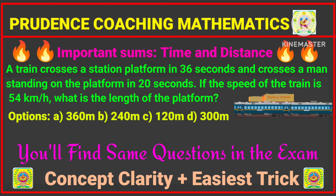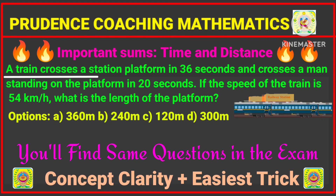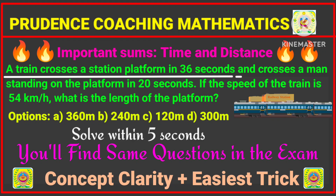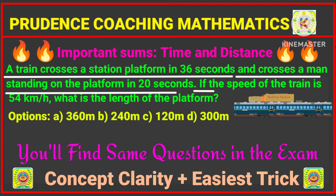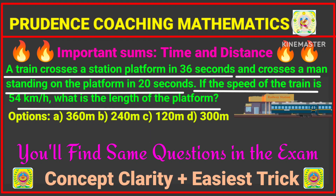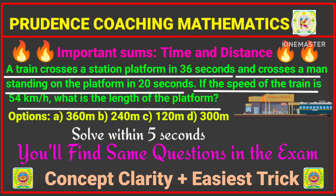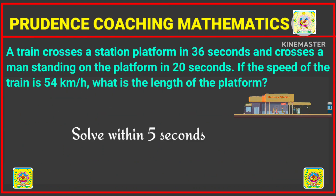Let us go through the question. A train crosses a station platform in 36 seconds and crosses a man standing on the platform in 20 seconds. If the speed of the train is 54 kilometers per hour, then what is the length of the platform?